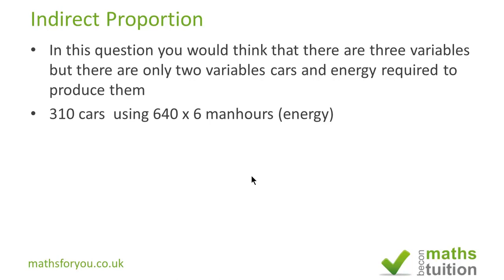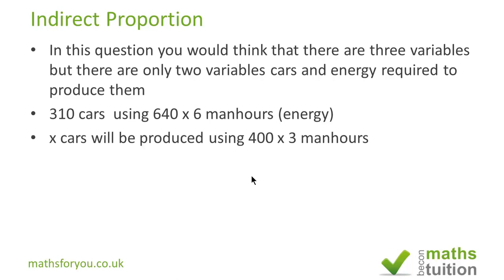You've got 310 cars, and to produce 310 cars, you need 640 times 6 man-hours — that is actually the energy required to produce 310 cars. It's only 2 variables. So to produce x cars, you need 400 times 3 man-hours, and that's the energy required to produce x cars.